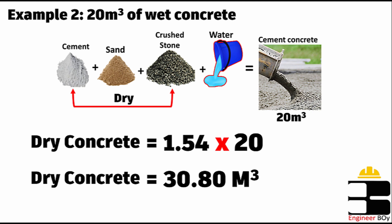I have seen in different books, like B and Delta, they use 1.50 as this conversion factor. So it can be different and it can be worked out after designing the mix. For concrete, that's it — 1.54 is a conversion factor to convert your wet concrete into dry concrete. See you in the next video.